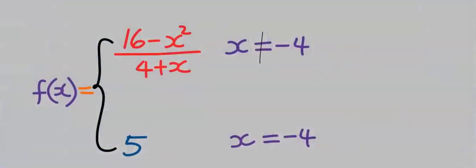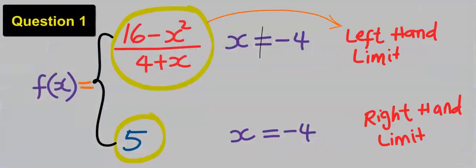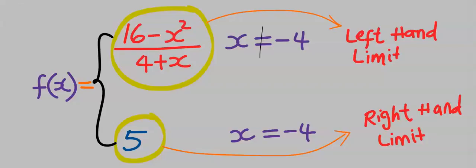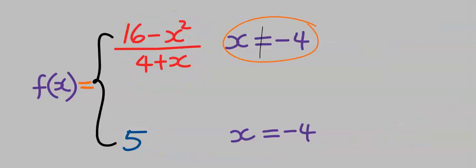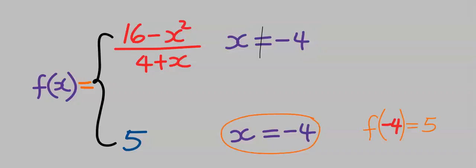Let's consider this first question. The upper arm is known as the left-hand limit, while the lower arm is known as the right-hand limit. Both must be equal if this limit will exist. The condition for the upper arm, which is the left-hand limit, states that x must not be equal to minus 4 using direct substitution, while the condition for the right-hand limit states that there is a function which the x value gave us 5.